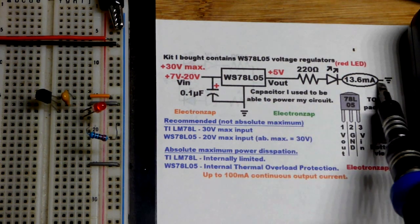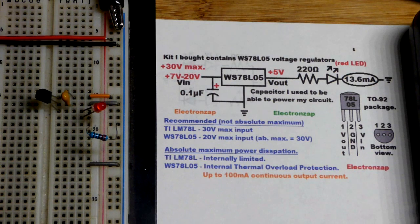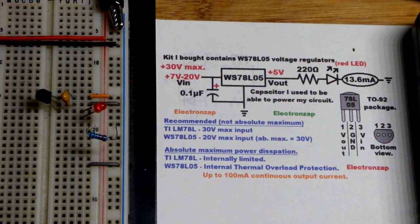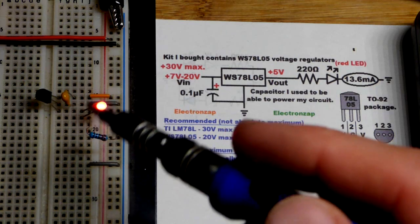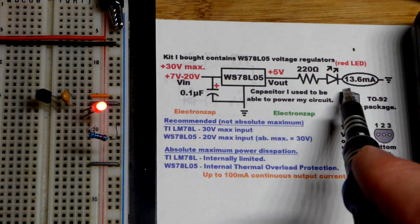You have 5 volts out in relationship to that. So we have the LED there, I'll turn the power on, and it doesn't matter if I set it to 7 volts or 20 volts or whatever, the LED is going to stay the same brightness.